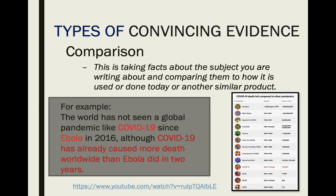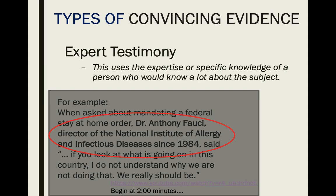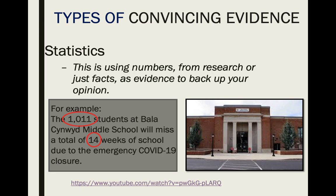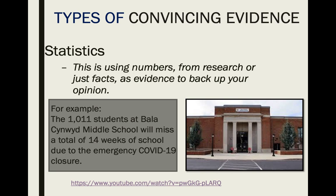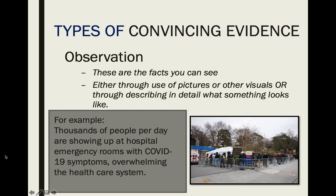Those are the five different types of evidence. Some of the most effective you can use are expert testimony — hard to beat an expert in their field with a direct quote that directly supports your opinion — and statistics, using numbers, which are facts you can't argue with since it's not an opinion. Weaker are prediction, since it hasn't even happened and there's no guarantee, and observation can be weak too — saying 'thousands of people per day' when a picture might not even support hundreds.